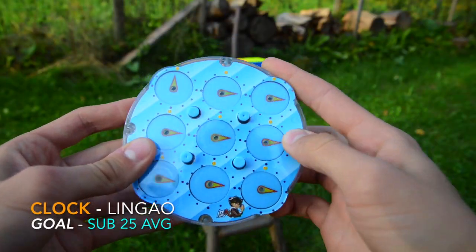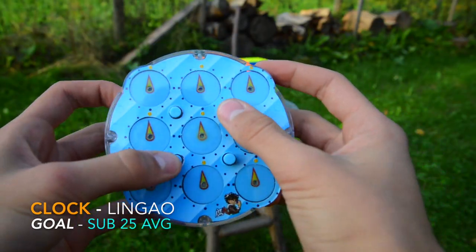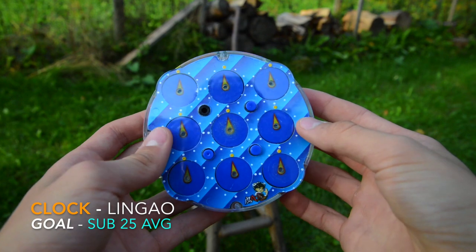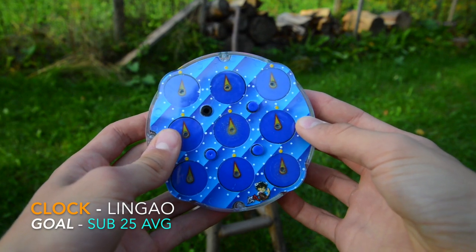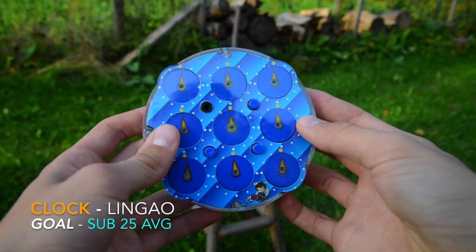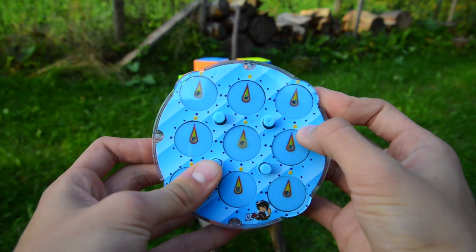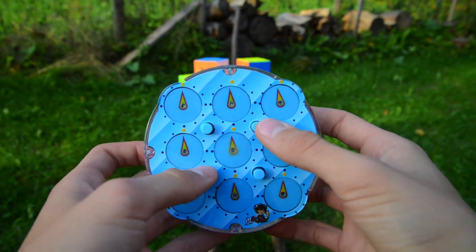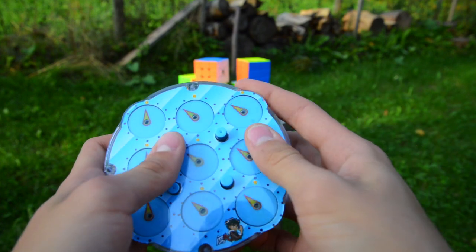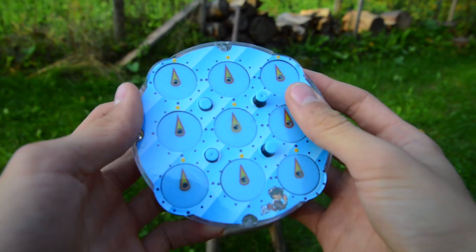Next up is the Rubik's Clock. I actually like Rubik's Clock. My goal is a sub-25 second average and that might get me a medal, but we'll see how things turn out.